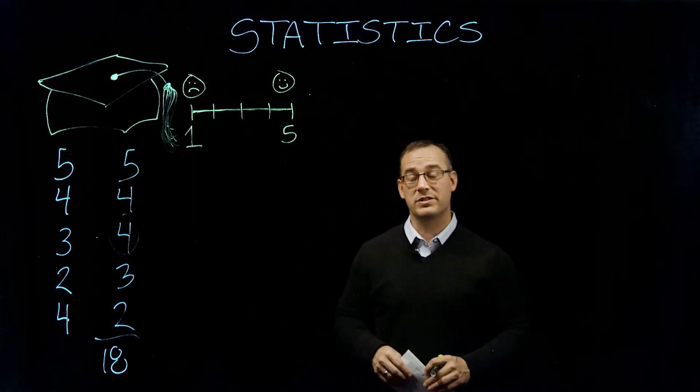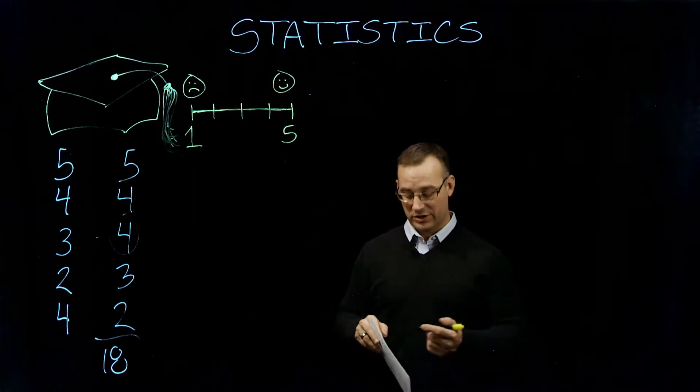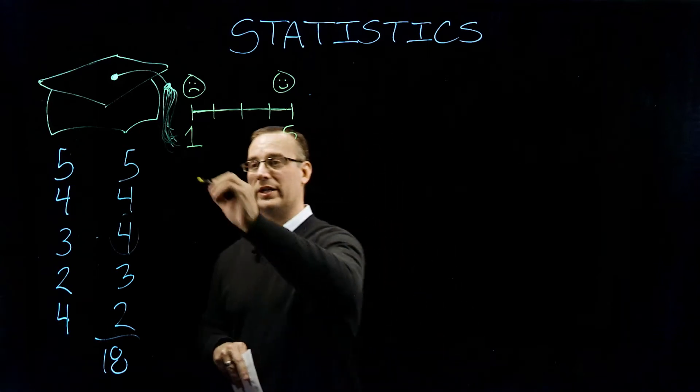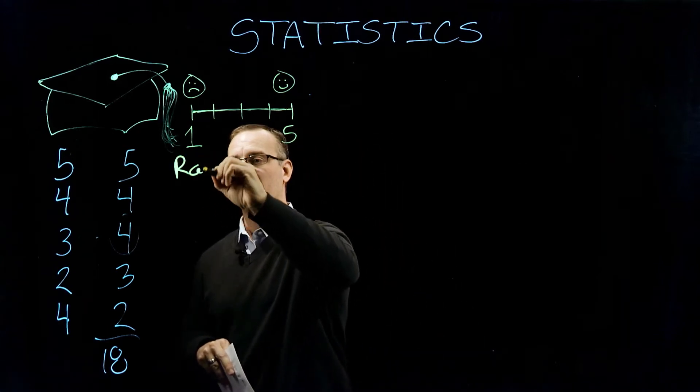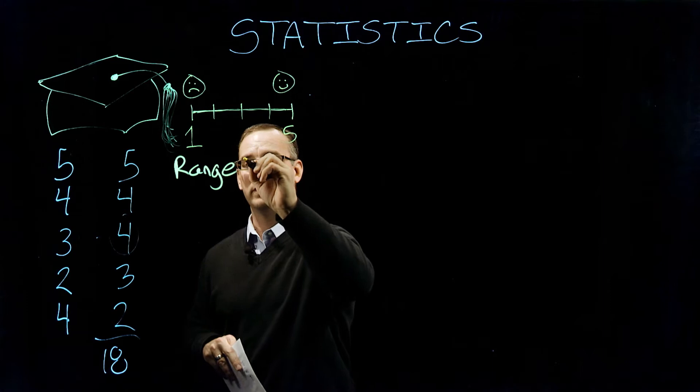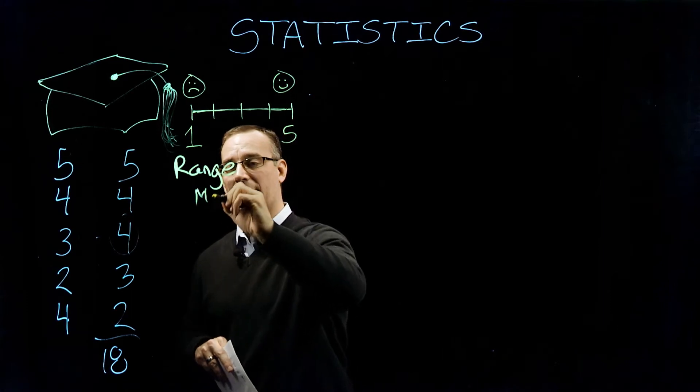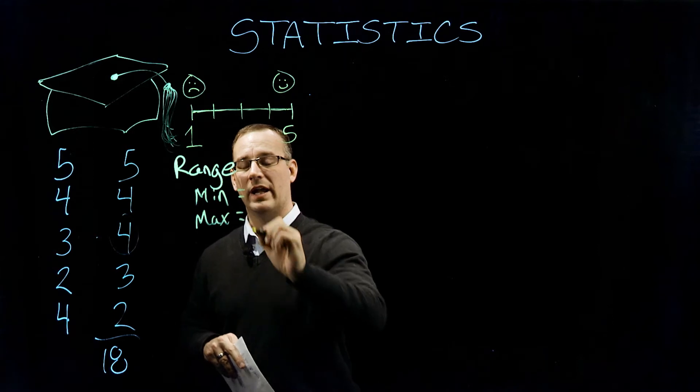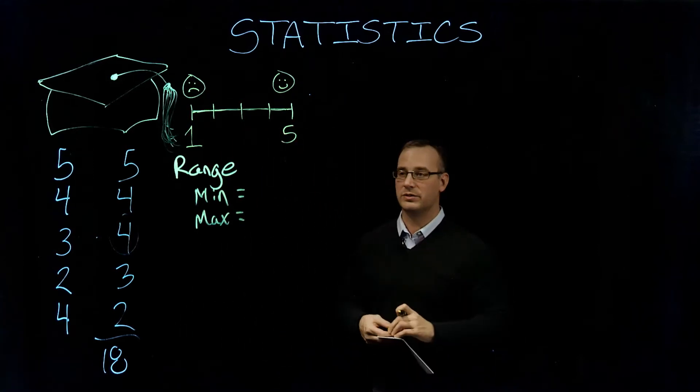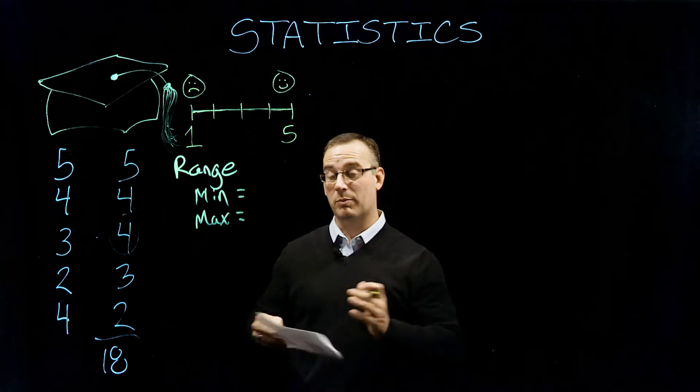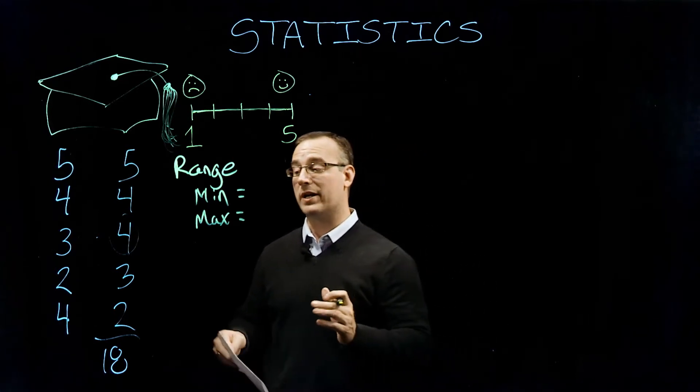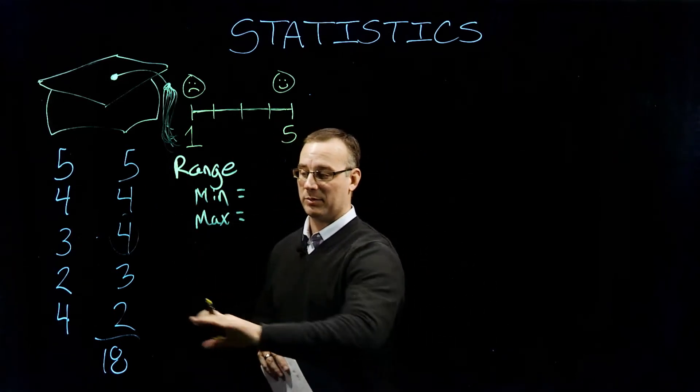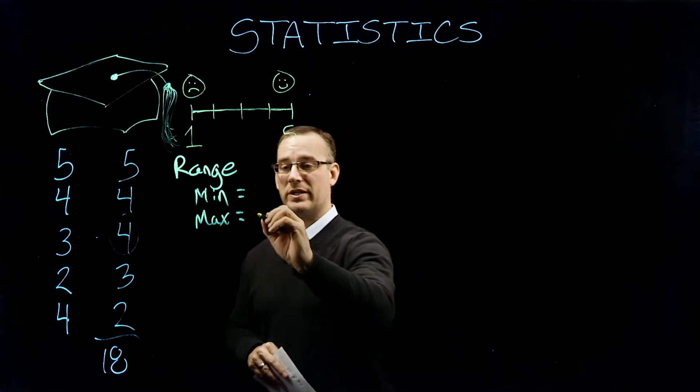One of the first measures of variability that we're going to look at is what's called the range. And in essence, range is going to look at the minimum and maximum. And there's a couple ways that I often tell students that we can report range. The first is we can just report the raw numbers for min and max. So in this case, our maximum is five, and our minimum is two.